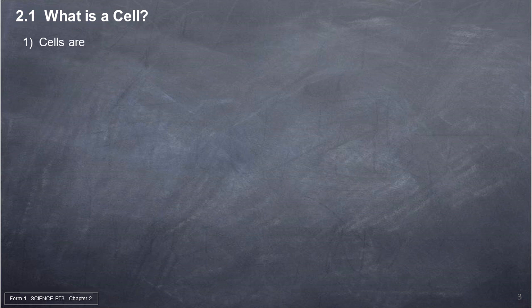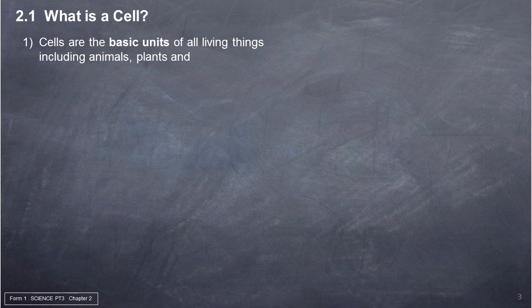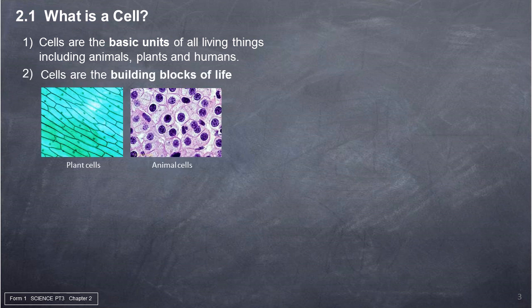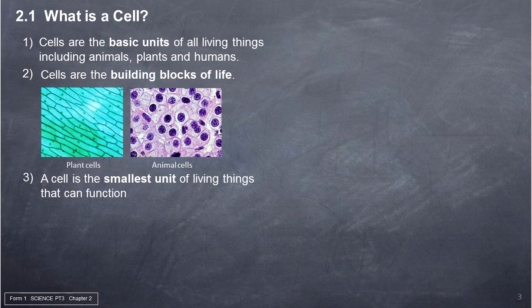2.1 What is a cell? 1. Cells are the basic units of all living things, including animals, plants, and humans. 2. Cells are the building blocks of life. 3. A cell is the smallest unit of living things that can function and survive on its own.